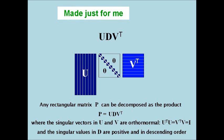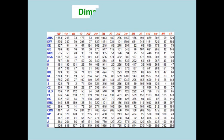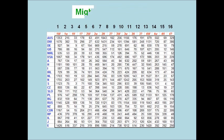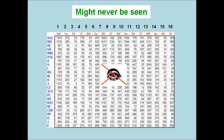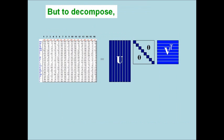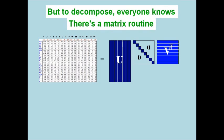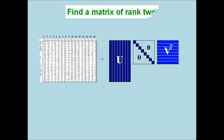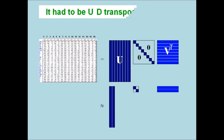made just for me and U. Dimension 16 might never be seen, but to decompose, everyone knows there's a matrix routine. Thanks to all this you can do — find a matrix of rank 2. It had to be U, D transpose V, the SVD.